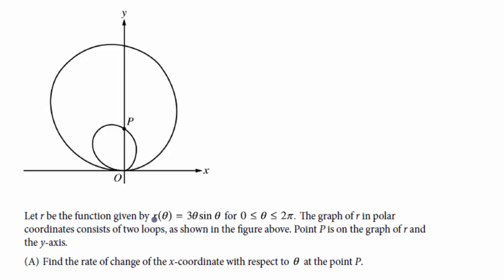Let r be the function given by r of theta equals three theta sine theta, for theta between zero and two pi, including zero and two pi. The graph of r in polar coordinates consists of two loops, as shown in the figure above.